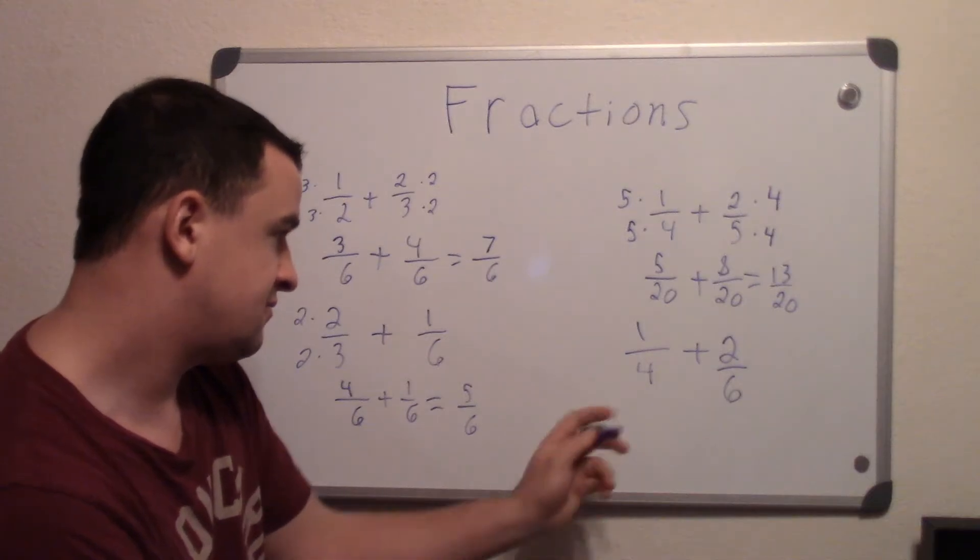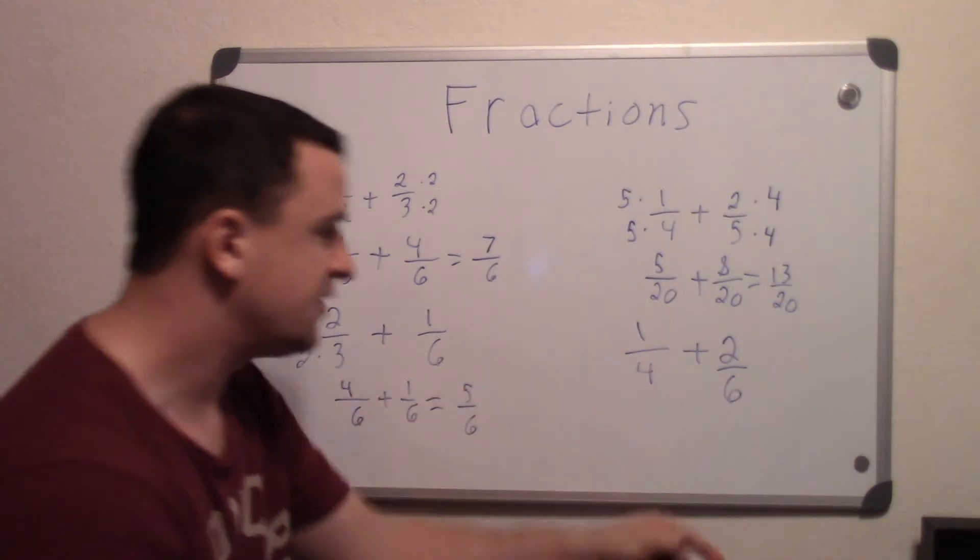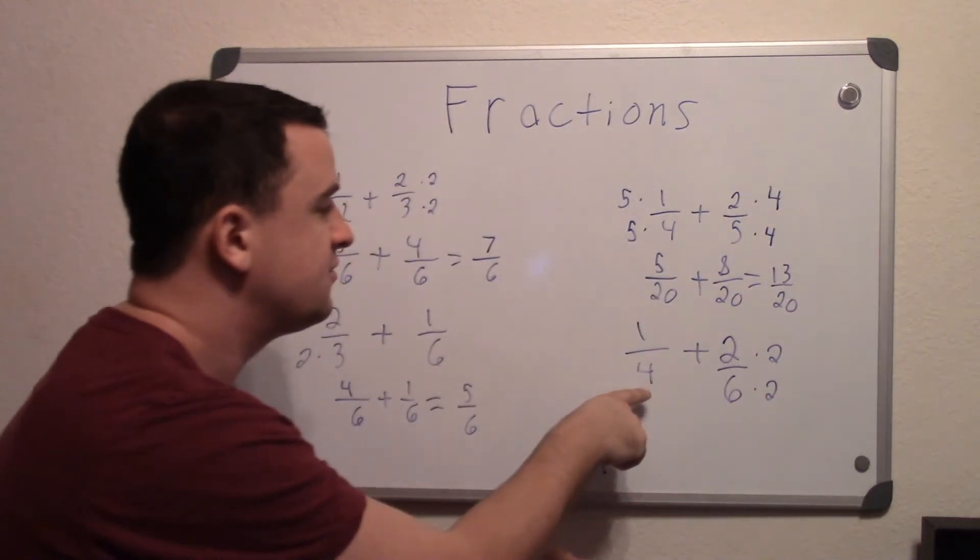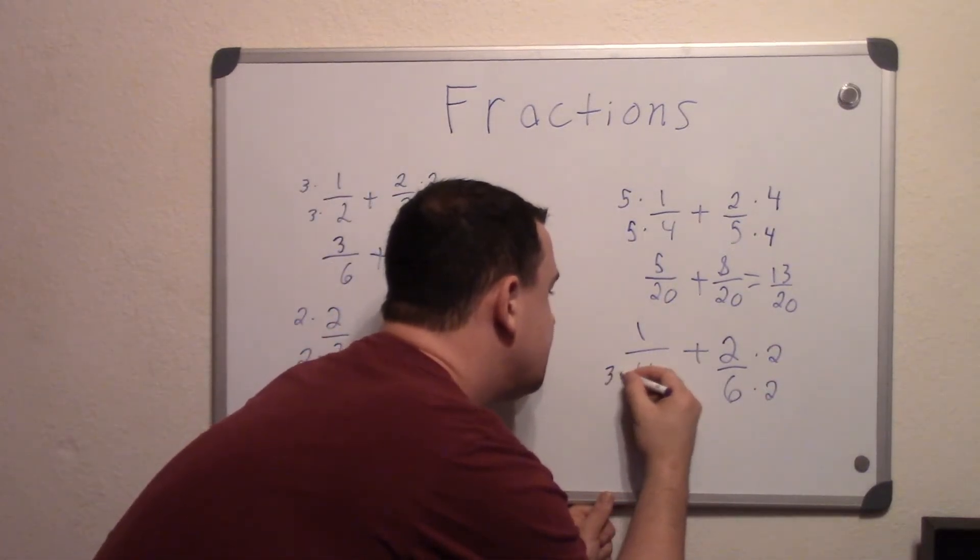So what gives us both of those numbers? To get to 12, 6 times 2. We do that to the top, and for this one is 3, so we do it times 3.